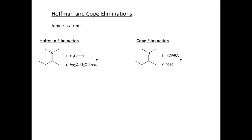The first thing I'm going to do is draw a lone pair on our nitrogen. We know that nitrogen can act as a good base or also as a good nucleophile. In step one, we're adding a good electrophile, and essentially we're doing an SN2 reaction where the nitrogen attacks the methyl group and kicks out the iodide. The consequence is we form a new bond from nitrogen to an additional methyl group, so now we have a quaternary amine with four bonds to carbon and therefore a positive charge.